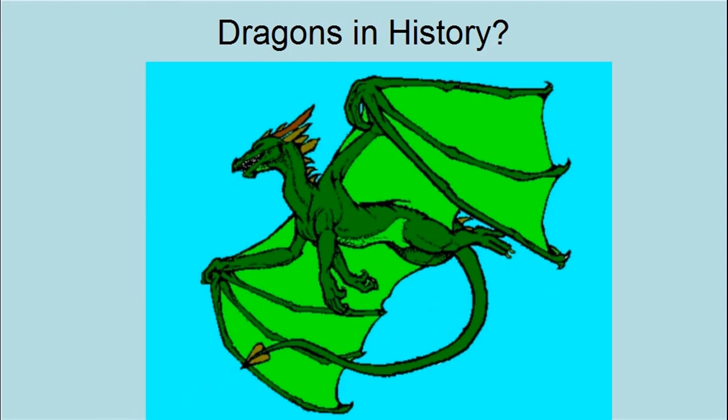History has many stories about dragons. In fact, histories written at the time have accounts about people encountering and even killing dragons. The descriptions of these dragons often match known types of dinosaurs, and the standard picture of a dragon is an amalgam of various types of dinosaurs.